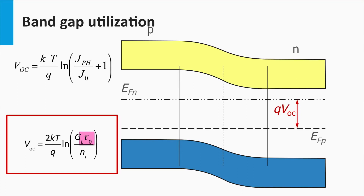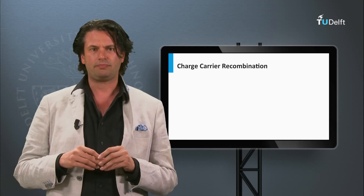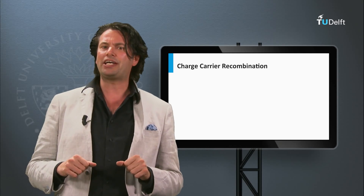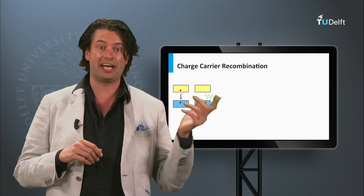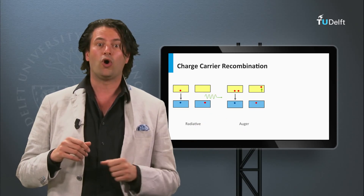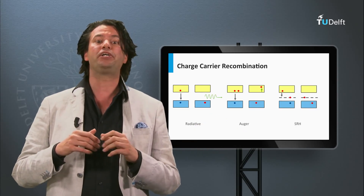In other words, the longer the lifetime, the larger the splitting between the quasi-Fermi levels is possible and the larger fraction of the bandgap energy can be utilized. The lifetime of the minority charge carriers is determined by the recombination rate. As discussed last week, we have three different recombination mechanisms: radiative, Auger, and Shockley-Reed-Hall.